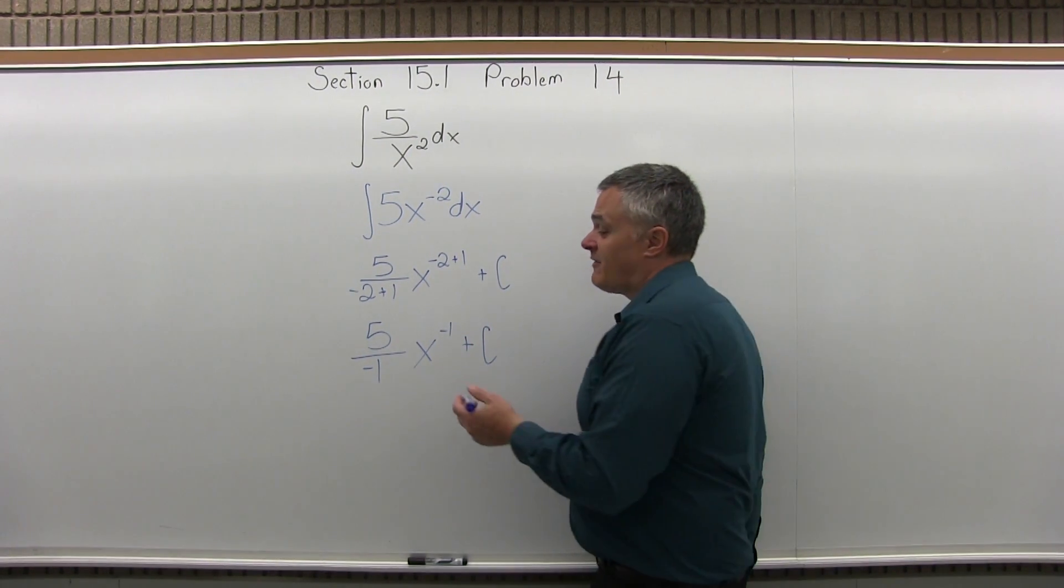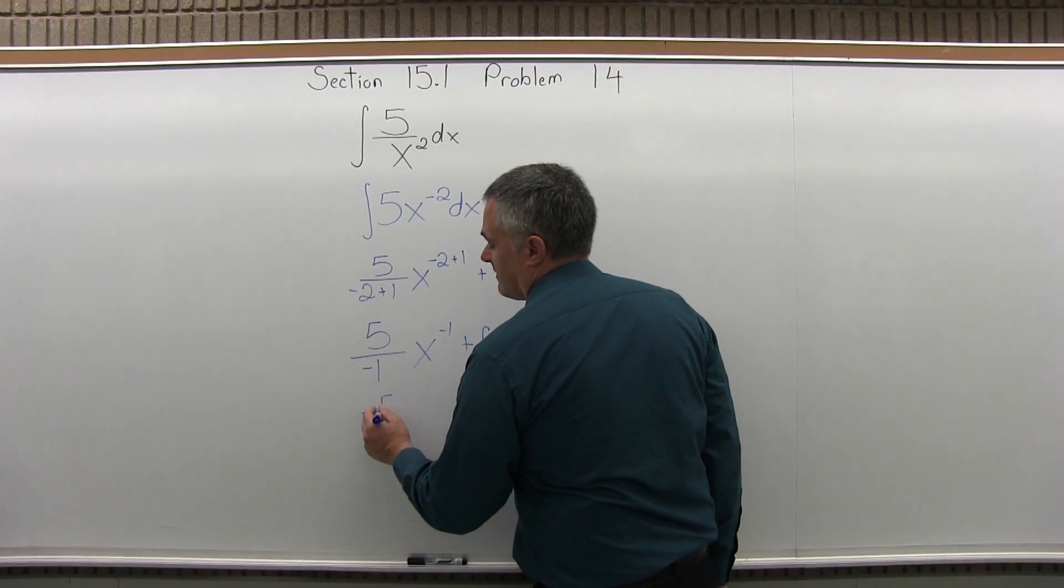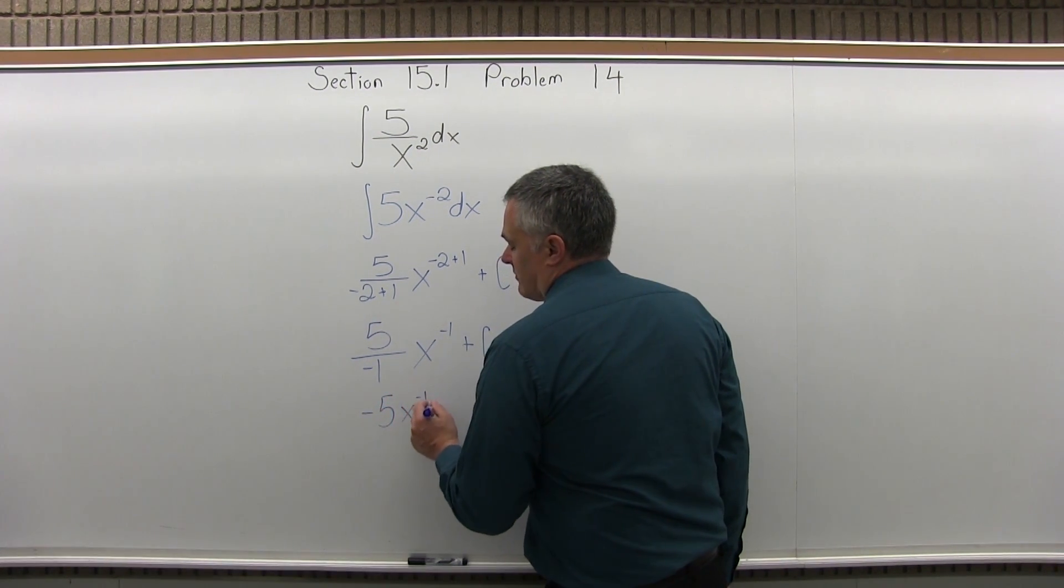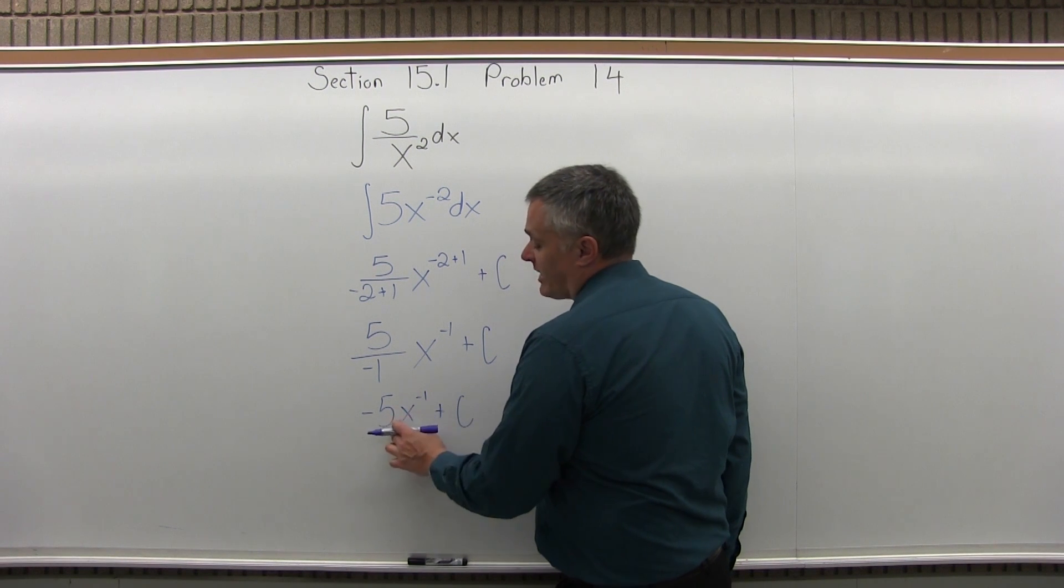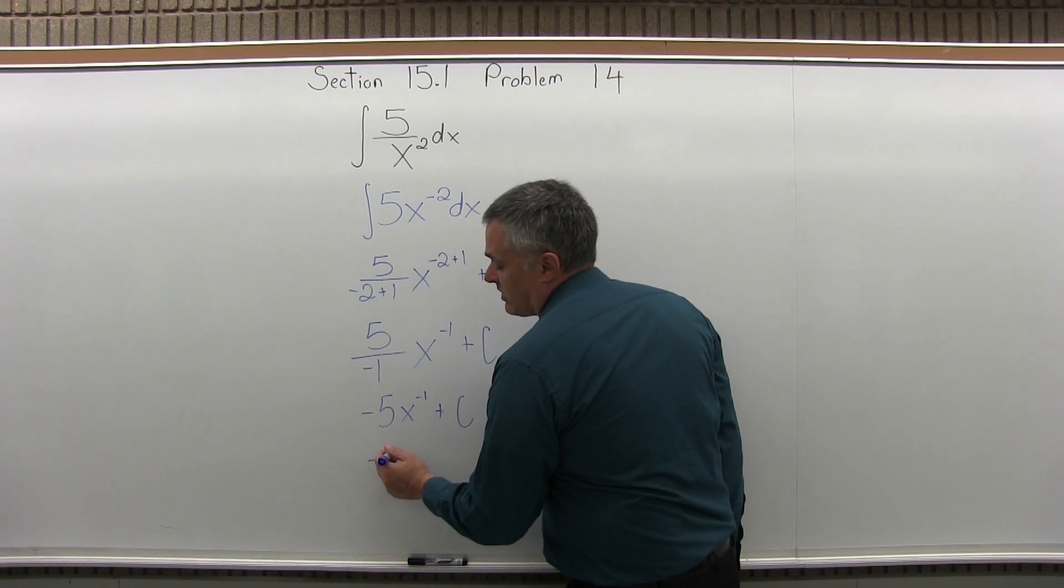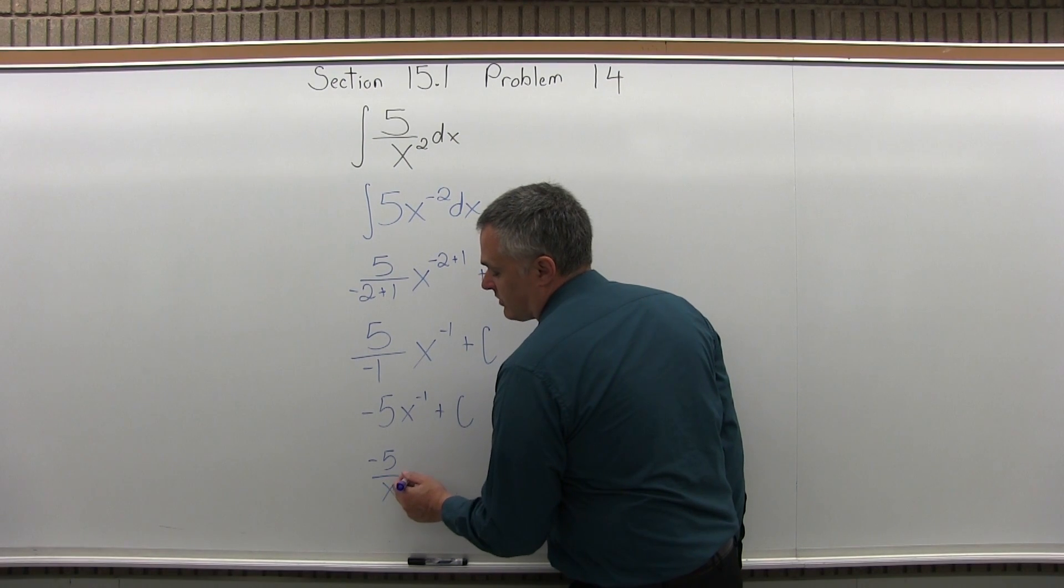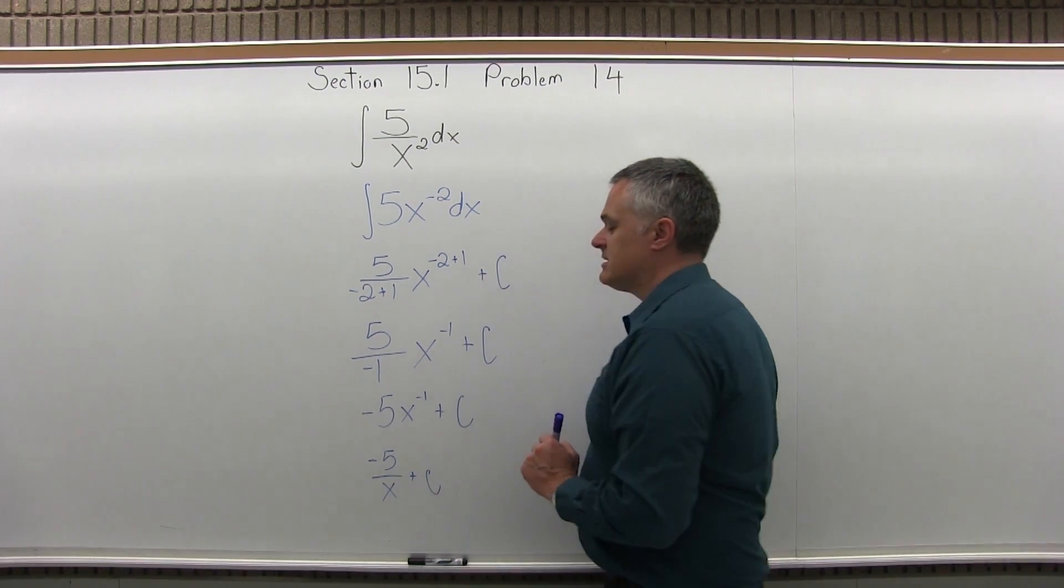We can clean it up a little bit, the 5 over minus 1. We could certainly call it minus 5, x to the negative 1 plus the constant. And that's fine the way it is, or if you prefer, you can make that minus 5 over x to the positive 1 plus the constant. It's the same thing.